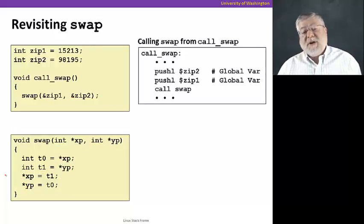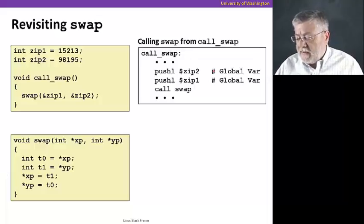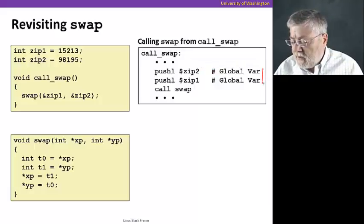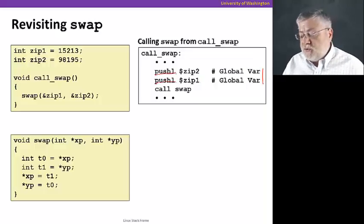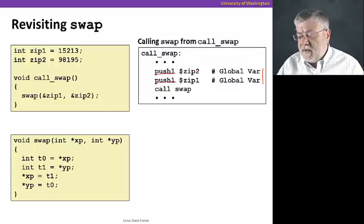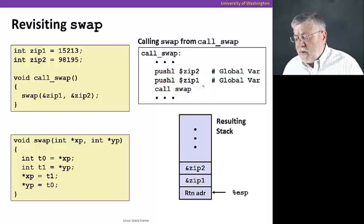Call_swap is pretty easy to see in assembly code. What it's going to be doing, at least the parts we care about, are going to be doing something pretty straightforward. They're going to be putting the two arguments onto the stack using push instructions. These will push the two addresses of the two variables onto the stack. And then it's going to execute the call swap to get the callee procedure started.